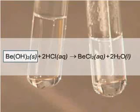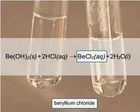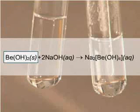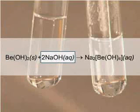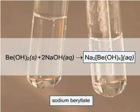Beryllium hydroxide reacts with hydrochloric acid to give beryllium chloride. Beryllium hydroxide also reacts with sodium hydroxide to produce sodium beryllate. This means that beryllium is part of the anion in this compound.